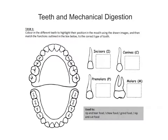We've got a diagram here that's not labelled, but we've got incisors, canines, premolars and molars. The task is to colour in the main four types of teeth, map them to the picture on the left, and suggest what each one does.